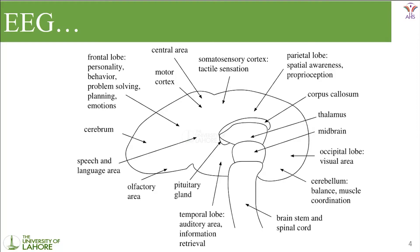The frontal lobe is most commonly known for personality, behaviour, problem solving, planning, and emotions. The parietal lobe is known for the speech and language area. Every part of the brain consists of different areas for emotions, speech, memory, and vision. All five senses are controlled by our brain. The brainstem and spinal cord carry all signals through motor neurons to our body, giving movement to our tongue and different body parts.